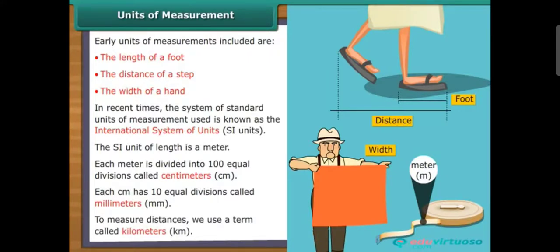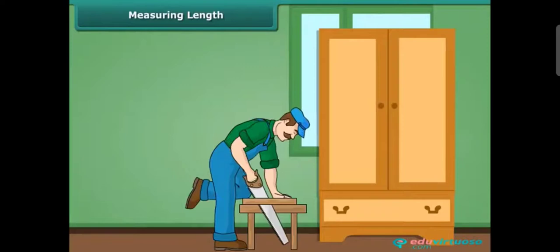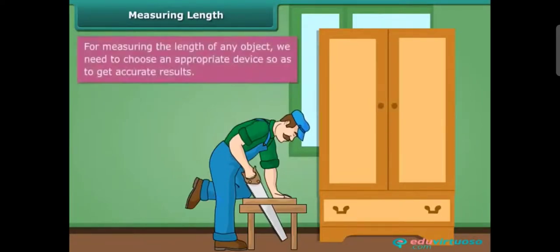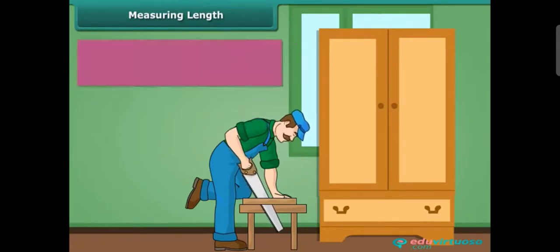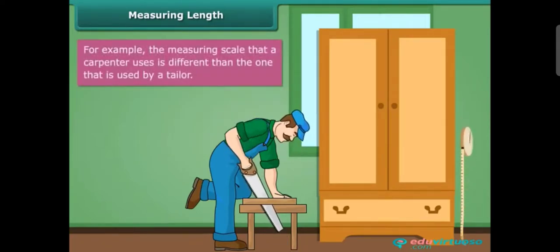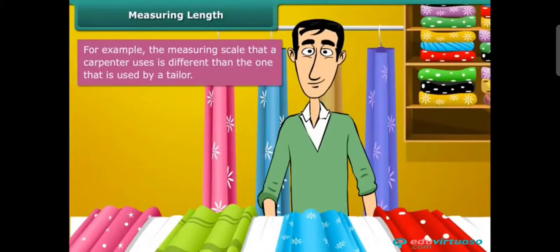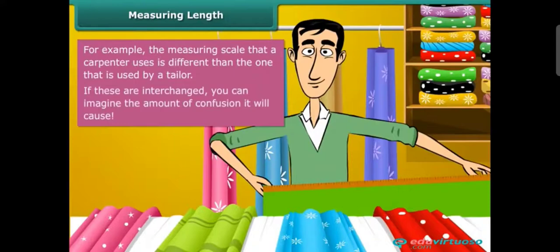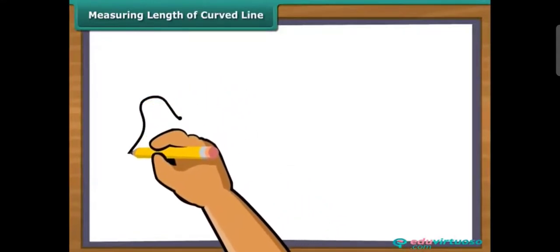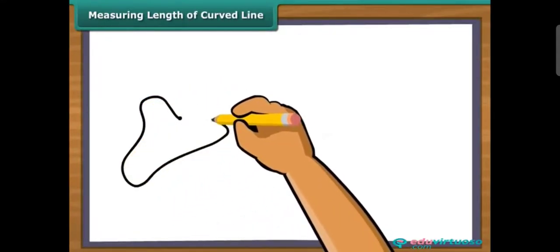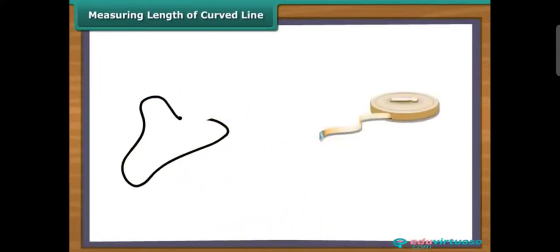To measure distances we use a term called kilometers, or km. For measuring the length of any object, we need to choose an appropriate device so as to get accurate results. For example, the measuring scale that a carpenter uses is different from the one used by a tailor. If these are interchanged, you can imagine the amount of confusion it will cause.